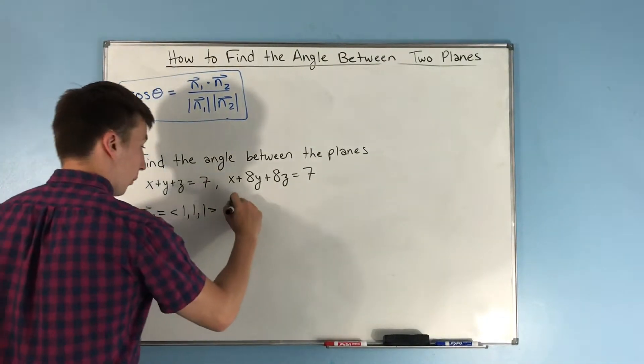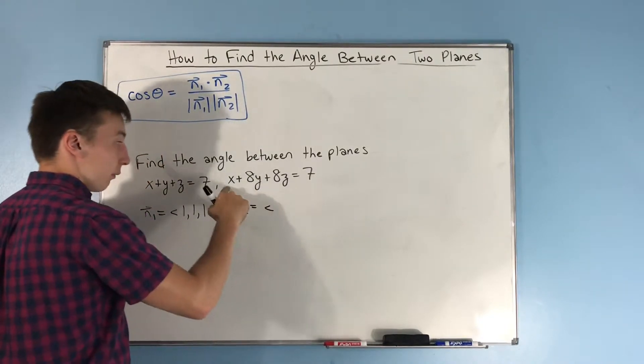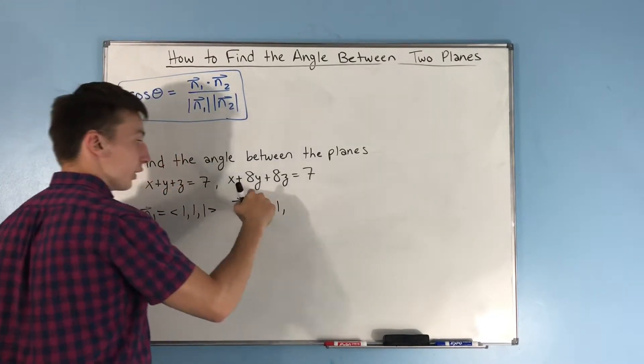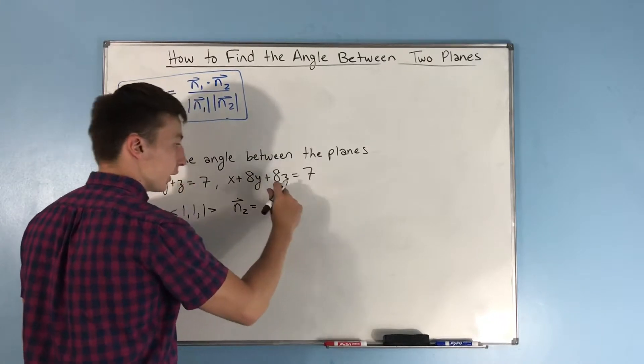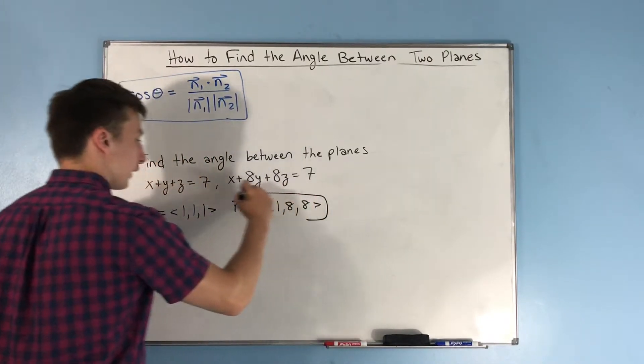What about your second normal vector, n2? Well, the normal vector will now be the coefficient on x is 1, coefficient on 8y is 8, coefficient on 8z is 8. There are your two normal vectors.